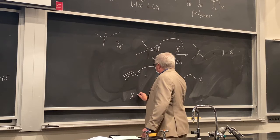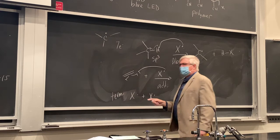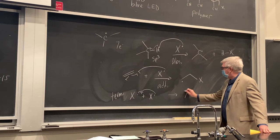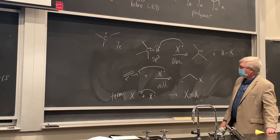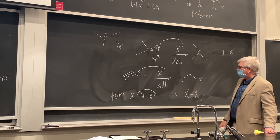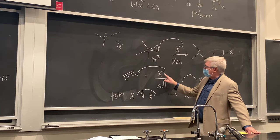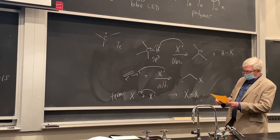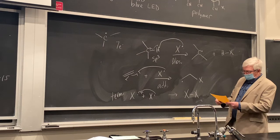The third reaction type is termination, where two radicals come together and couple. Both radicals become a closed shell and both get the octet. This is far less common because two high-energy species must collide together. It's much more likely that a radical will react with a closed-shell species. The concentrations of radicals are very low, making their coupling together very improbable.